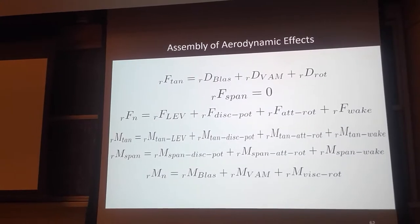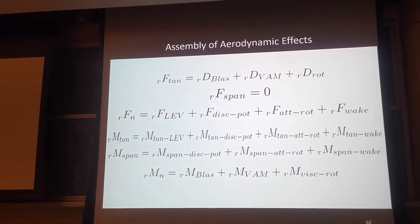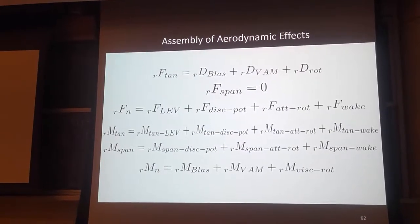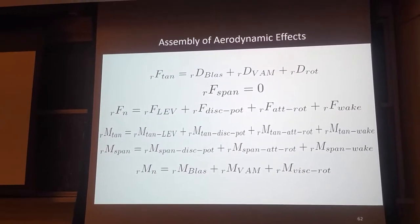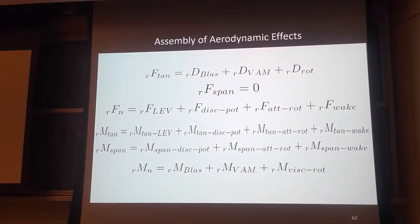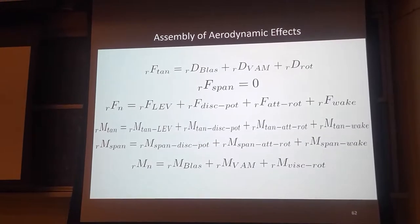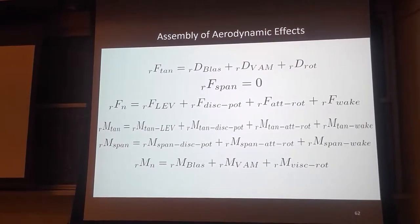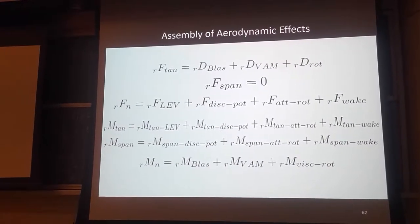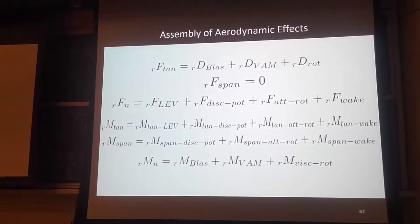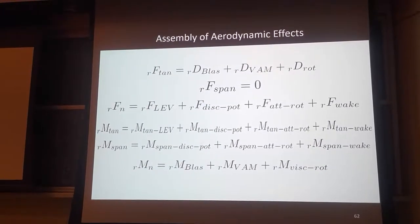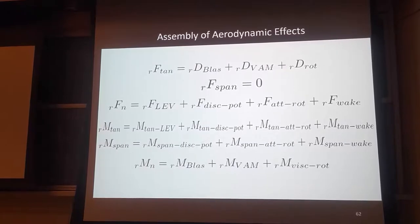The moment about the tangential axis is due to those same effects. The moment about the spanwise axis — the leading edge vortex doesn't have a significant effect, and it doesn't have an effect in the analysis we did because we used the leading edge section analogy, so the moment about that is zero. The torque about the normal axis is also due to the drag terms.